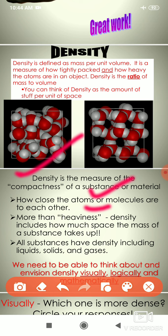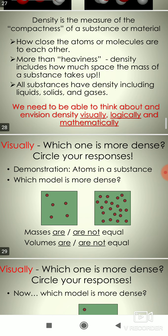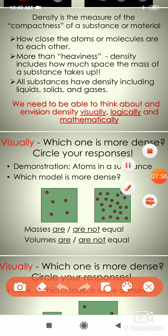Density is the ratio of mass per unit volume — how much mass is tightly packed in a certain amount of space. Density is the measure of compactness of a substance or material, and how close the atoms or molecules are to each other. All substances have density, including liquids, solids, and gases, and density of a substance always remains the same.